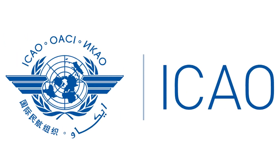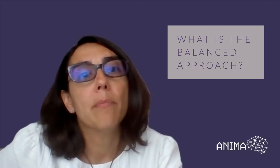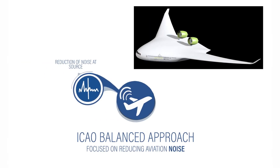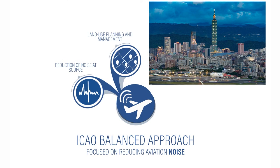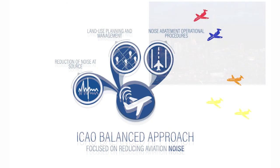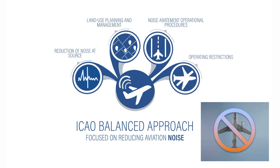Since the 1970s, ICAO has controlled individual aircraft noise by setting increasingly restrictive emission limits, and 20 years ago adopted the so-called Balanced Approach to support the industry in managing the negative impact of aircraft noise around airports. The Balanced Approach consists of identifying the noise problem at a specific airport and analyzing available measures to reduce noise through four pillars: first, reduction of noise at source; second, land use planning and management; third, noise abatement operational procedures to minimize overflight of sensitive areas; and finally, operating restrictions if problems remain.